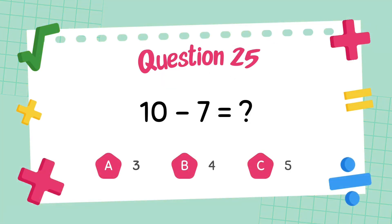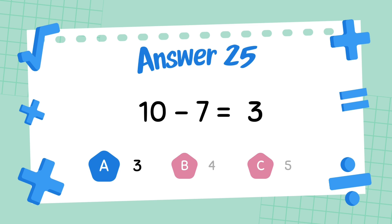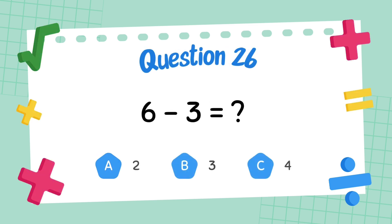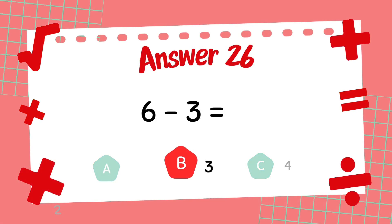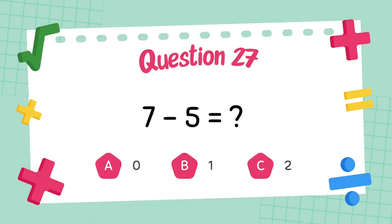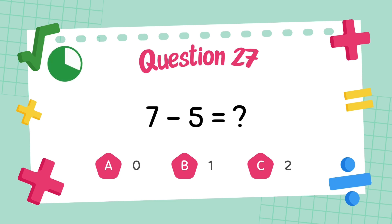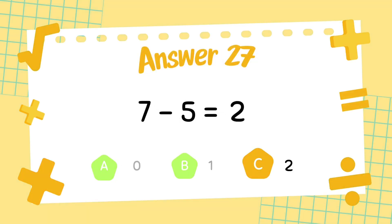What is 10 minus 7? The answer is 3. What is 6 minus 3? The answer is 3. What is 7 minus 5? The answer is 2.